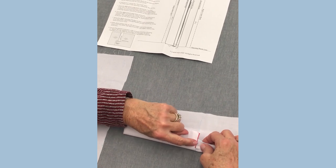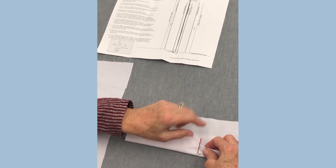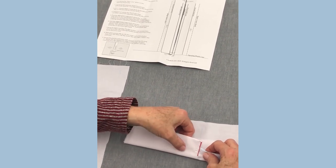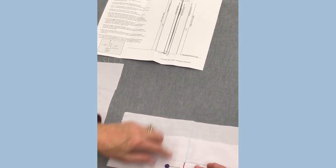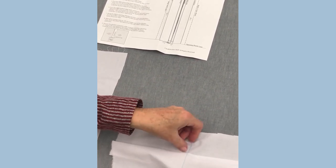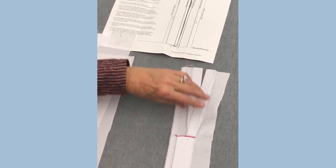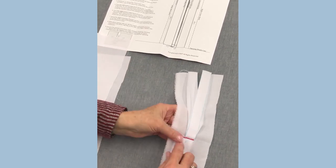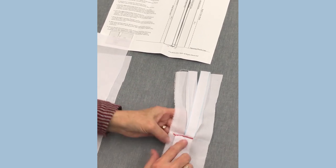You want to catch everything in the raw edges all the way over on both sides. You can see I didn't catch this real well right here. I should have probably done this again, but this is what holds it in place. After that is done, it looks like this on the back.